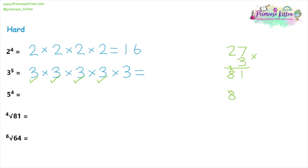Now multiply 81 by three, as I have one more three left. Units first: three times one is three. Tens: three times eight is 24. That gives 243 as our answer. Be very patient with this — do one step at a time, don't try to do it in your head, and when the mental arithmetic gets too much, use written methods. That should stop you getting confused and help you work through this quite quickly.